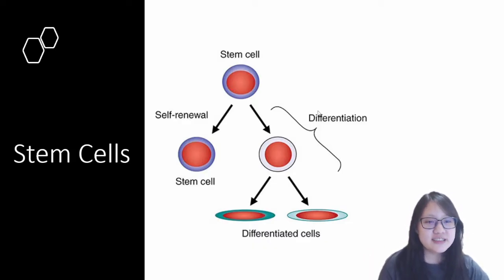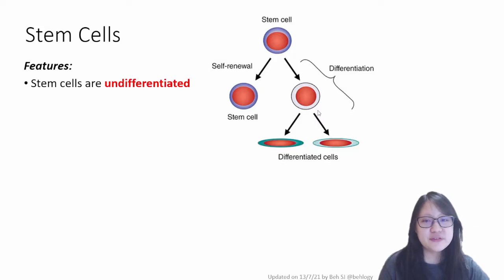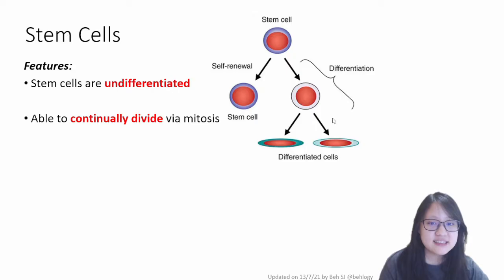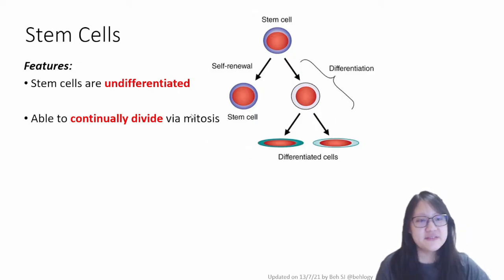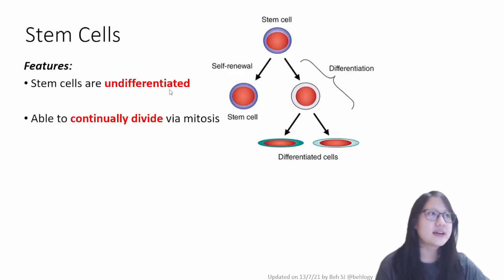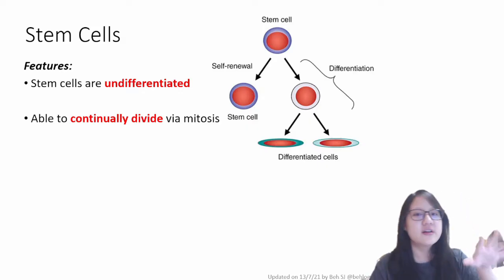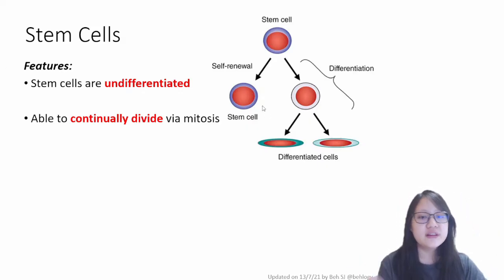Now stem cells are a pretty fascinating bunch and these are a few features. Stem cells are undifferentiated cells. They are able to continually divide via mitosis. So they don't have any specific particular function like respiration or muscle or whatever. They can continually divide via mitosis.